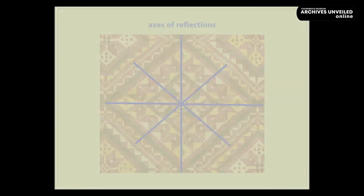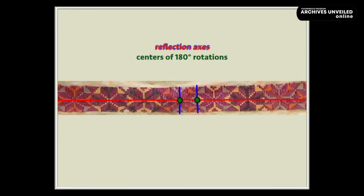The strip patterns along the borders have vertical and horizontal reflections, as well as 180-degree rotations about the points of intersection of the reflection axes.